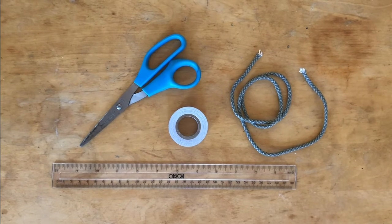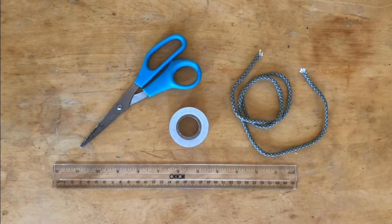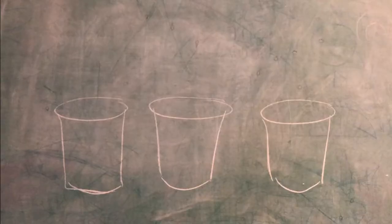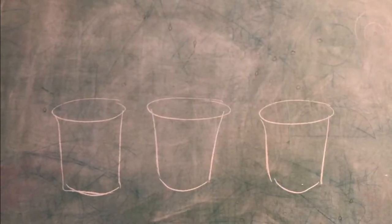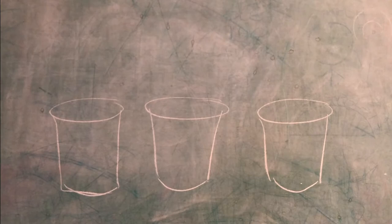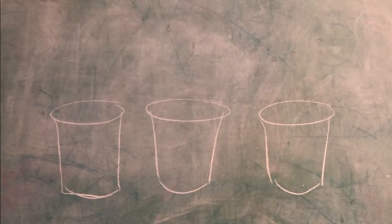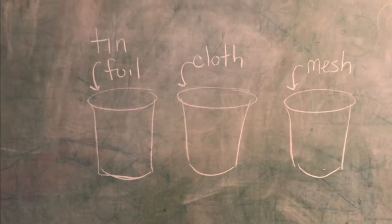Next gather some tools to help you make your experiment. Make sure that you find a ruler and a piece of string. For my experiment I started with three plastic containers and I added materials to the inside. I decided to use tin foil, cloth, and mesh.